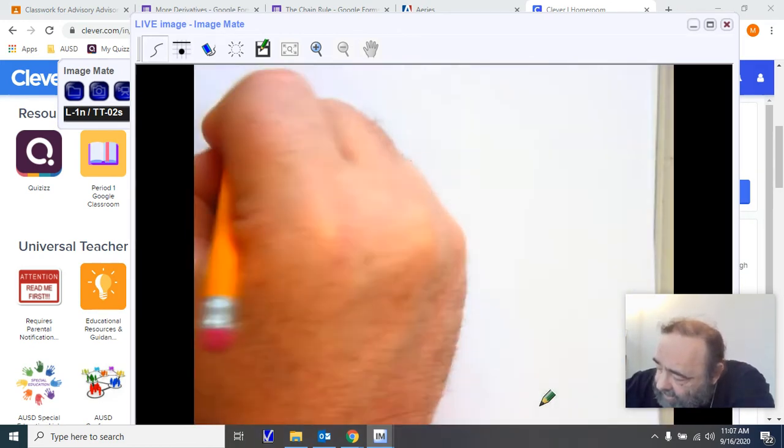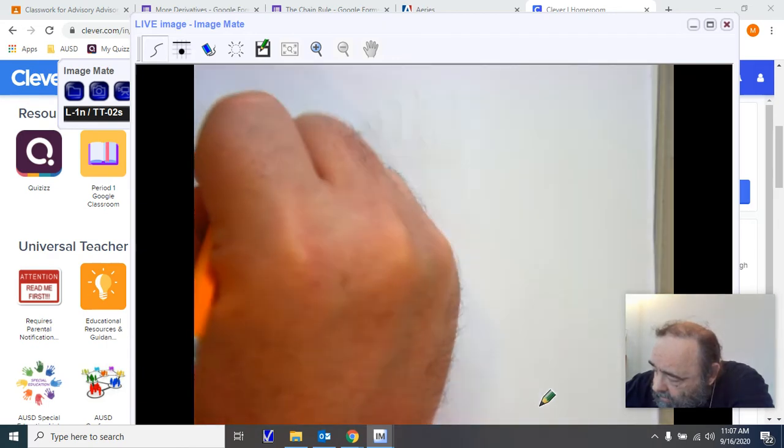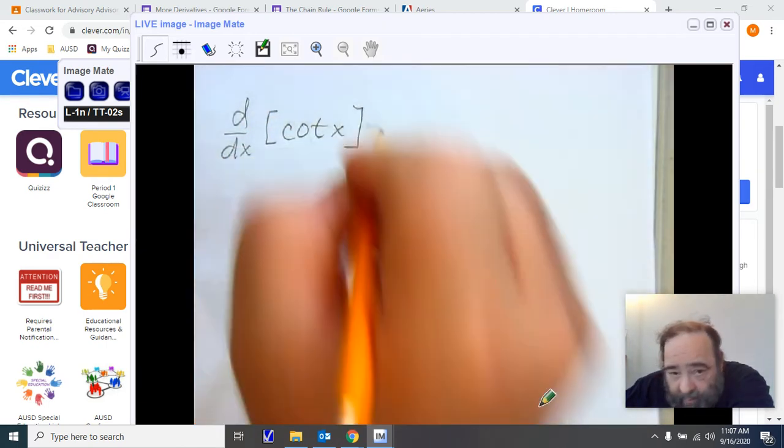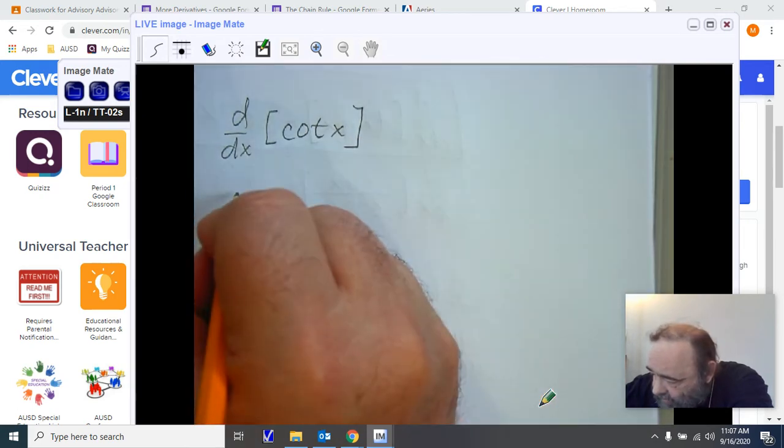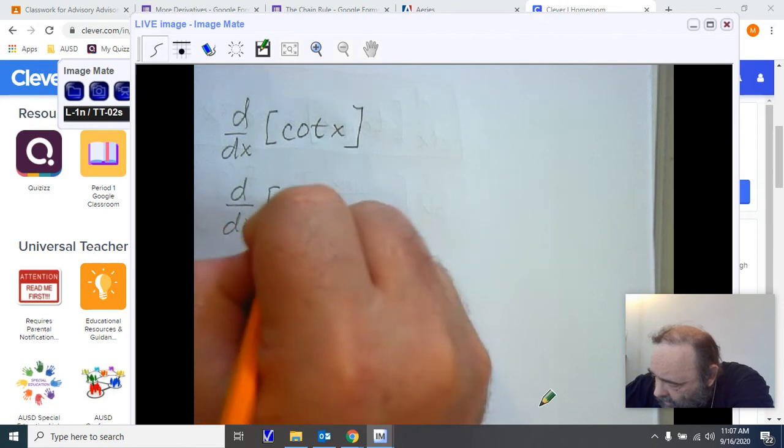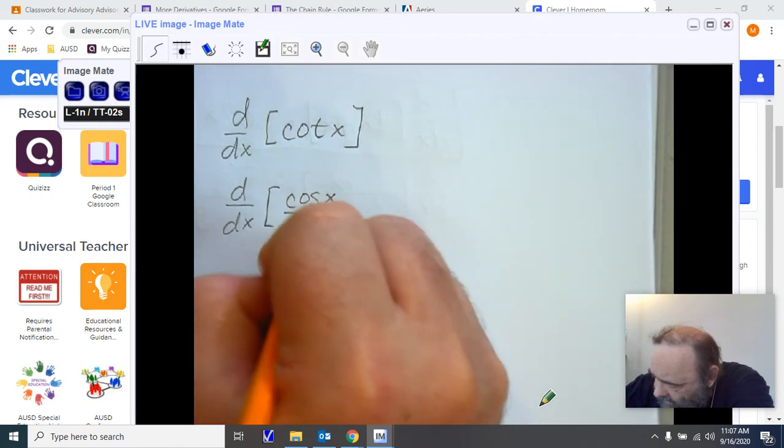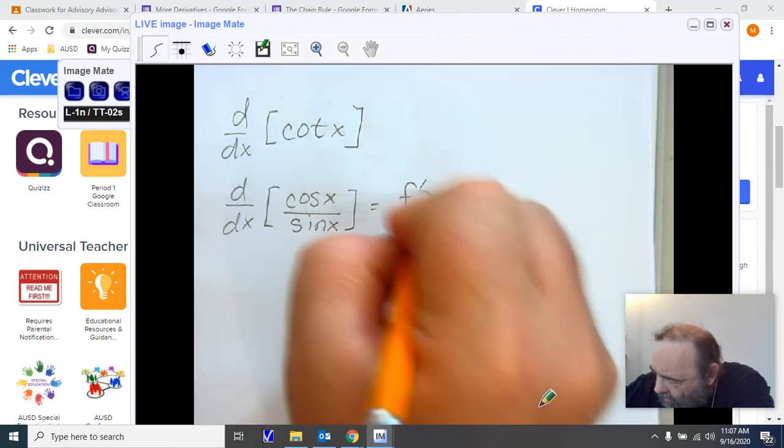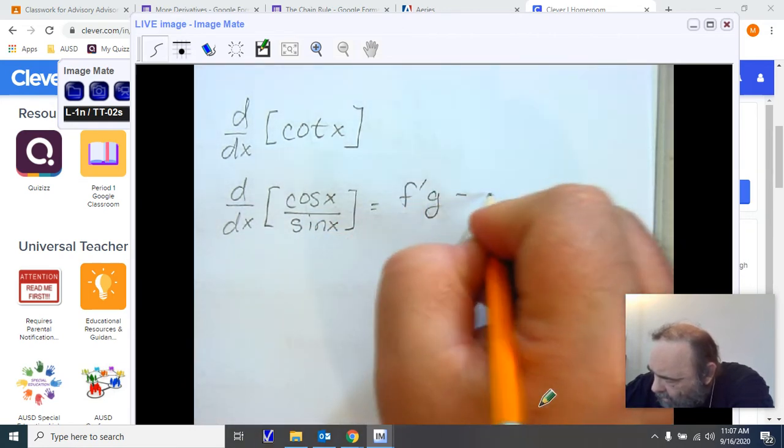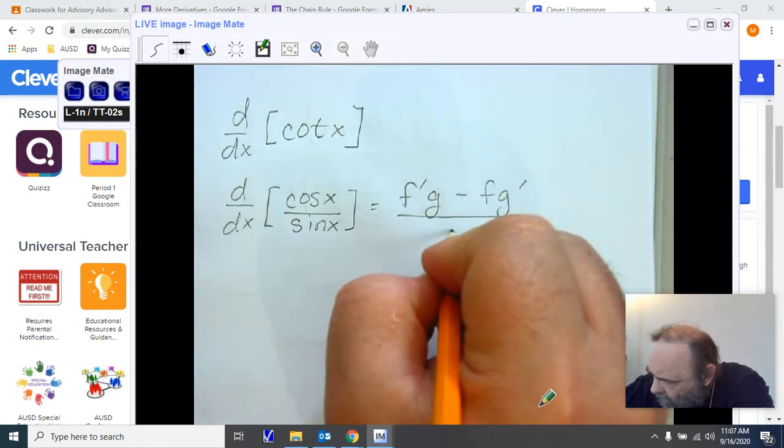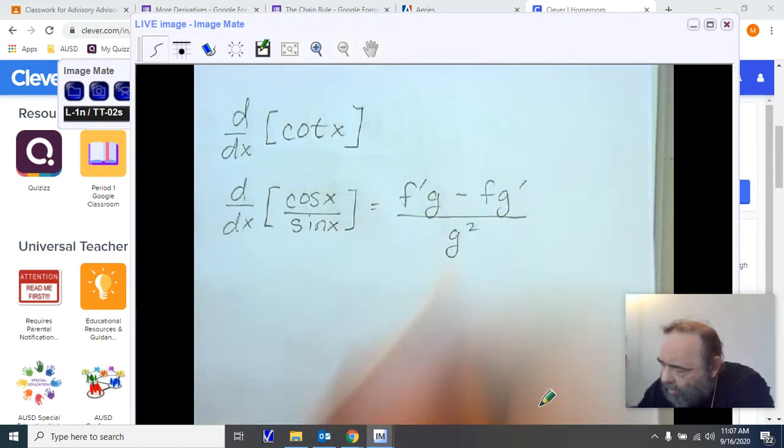When we're looking at d/dx of our cotangent of x, we're going to follow our same basic steps. We're going to start by taking the ratio, which is cosine of x over sine of x. And because the ratio is a quotient, I can now use the quotient rule. Notice that quotient rule is absolutely imperative.